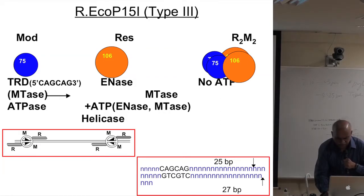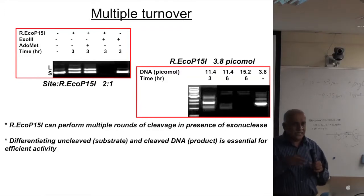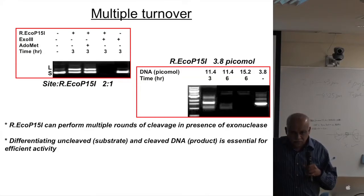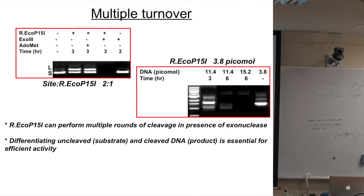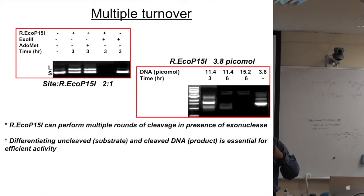For a long time people believed these are not true enzymes — they do something but are not like regular enzymes that perform multiple rounds of catalysis. It was also shown that when you take a large DNA like lambda and use a type 3 enzyme, you get only partial cuts, never complete cuts. This was explained by requiring two pairs of inverted sequences, but it was also believed these enzymes don't turn over — once they cut, they are somehow inactivated.